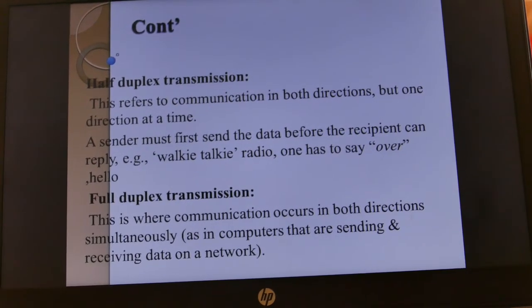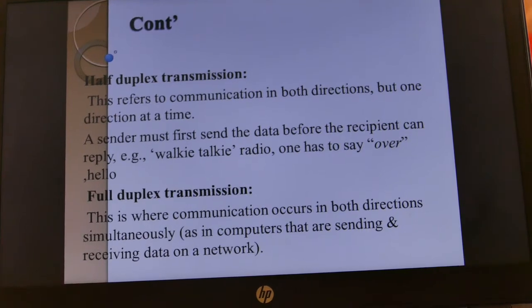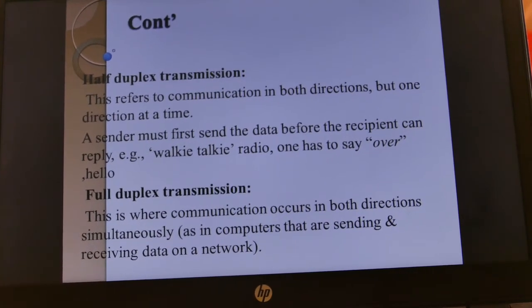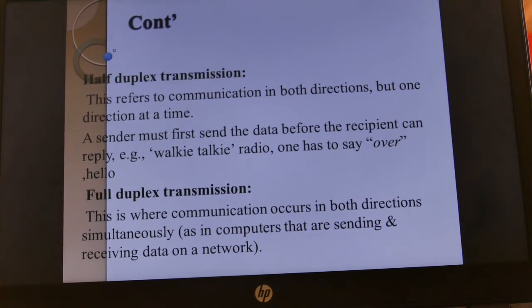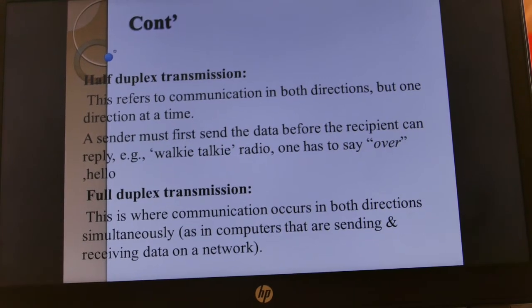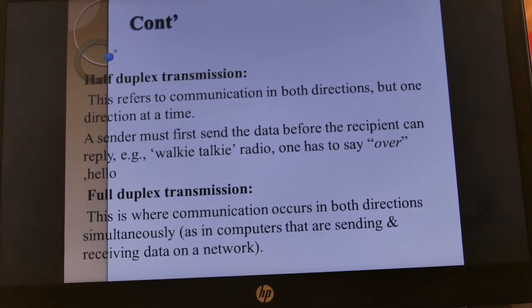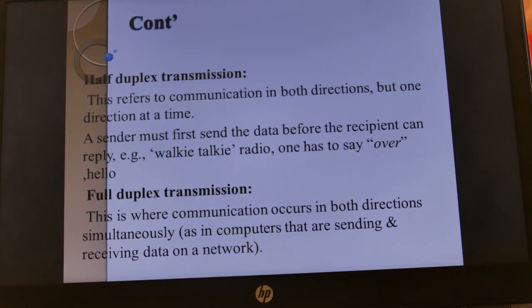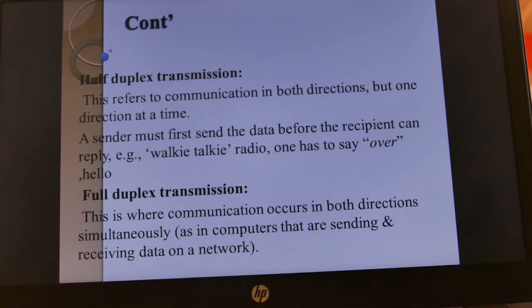Full duplex transmission is where communication occurs in both directions simultaneously, meaning you don't have to wait for the recipient to reply. You can continue sending data and the other party can also continue replying. Examples include chatting, using emails, using WhatsApp — you can communicate to each other simultaneously without waiting for a reply.